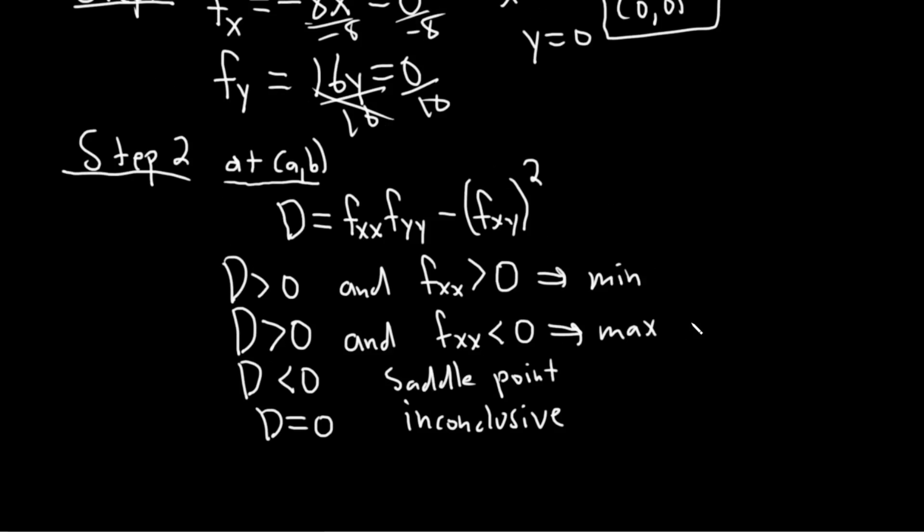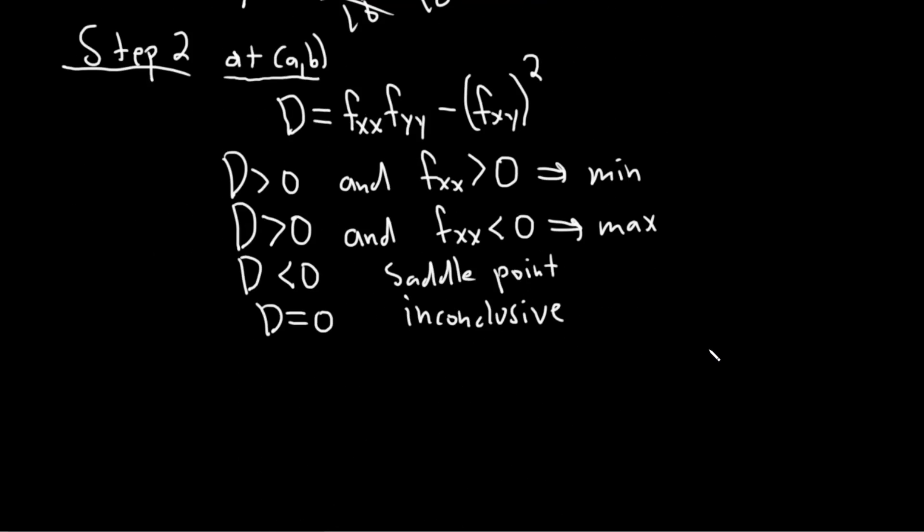So in our particular problem we have fx equals negative 8x. I'm going to write that down over here. fx equals negative 8x. And then we have fy and that's equal to 16y. So we basically now have to compute these other partials and plug them into this formula. So fxx that's going to be negative 8. And then fyy that's going to be 16.